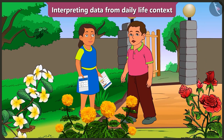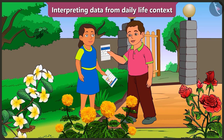Hey Bubbly, what are you doing in the garden? Bunty, Mummy has prepared this table and given it to me. There are different flowers in the garden. I am counting the blossomed flowers to find out how many flowers have blossomed.